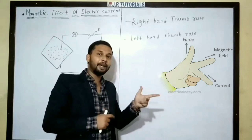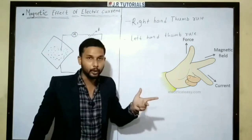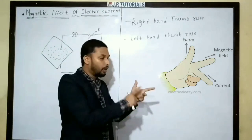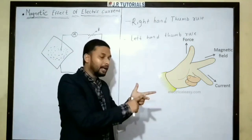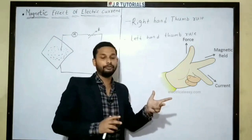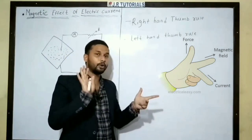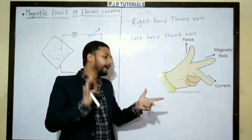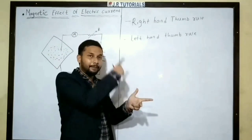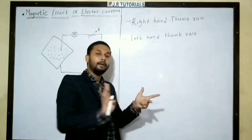The middle finger represents the current direction — this is the z-axis. So if we know the conductor and the magnetic field, the middle finger gives the direction of the current. To summarize: the thumb gives the force on the conductor, the index finger gives the magnetic field, and the middle finger gives the current direction.